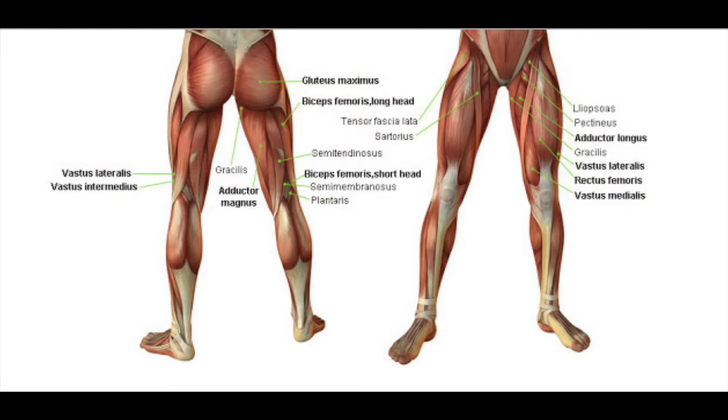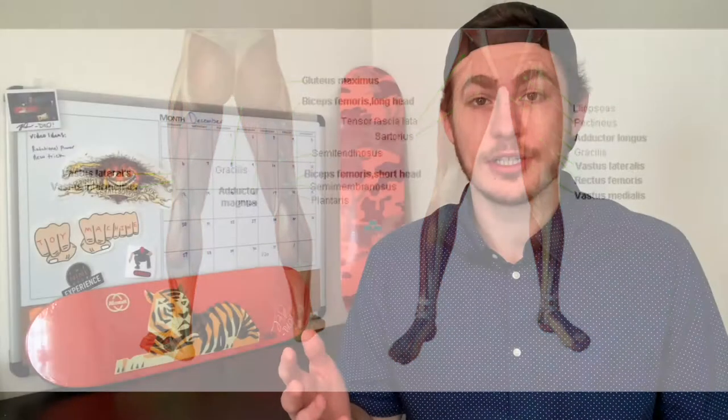Strong hips are required to transfer force in a vertical direction, which is basically any time you're going to jump, ollie, or do any sort of trick that involves popping your tail and getting off the ground. Additionally, having adequate hip strength has been shown to decrease the likelihood of sustaining a lower limb injury. So mastering the hip hinge can help you jump higher and help prevent injuries.